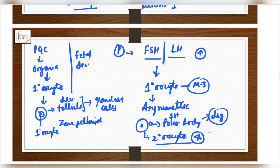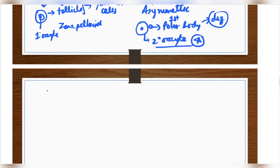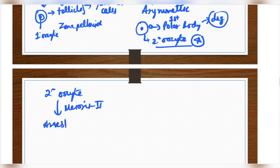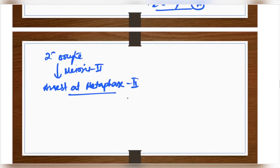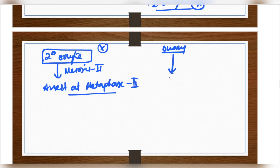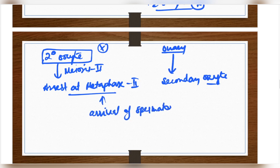So you are left with the secondary oocyte inside the ovary. This secondary oocyte again undergoes meiosis 2, but it arrests at metaphase 2. It cannot complete meiosis 2 on its own because whatever is released from the ovary is always the secondary oocyte. The completion of meiosis 2 depends on the arrival of spermatozoa — if the spermatozoa arrive, meiosis 2 will be completed, and after meiosis 2 you will get the ovum.